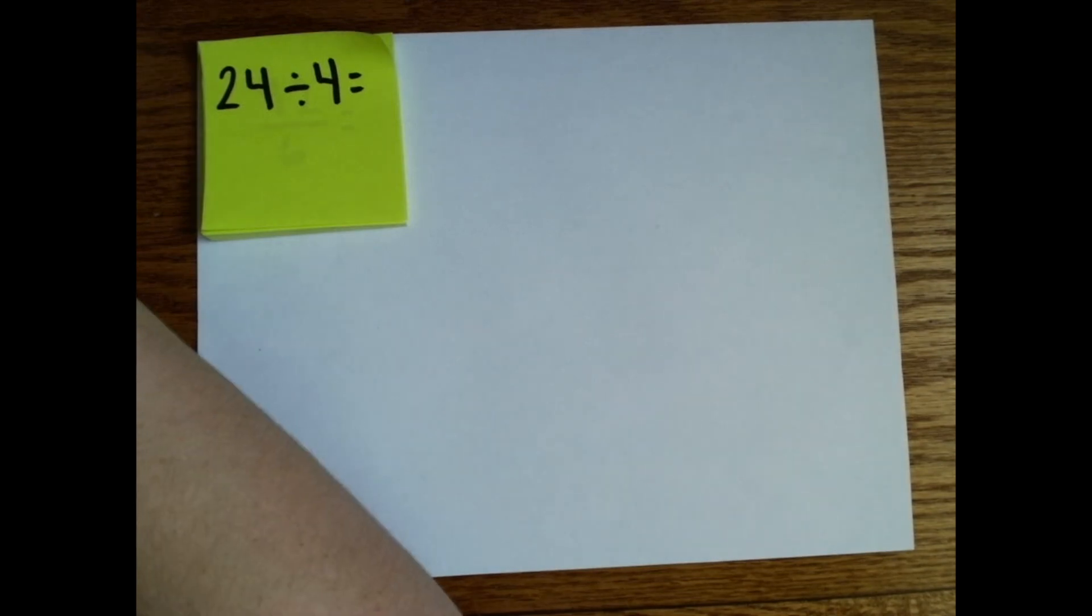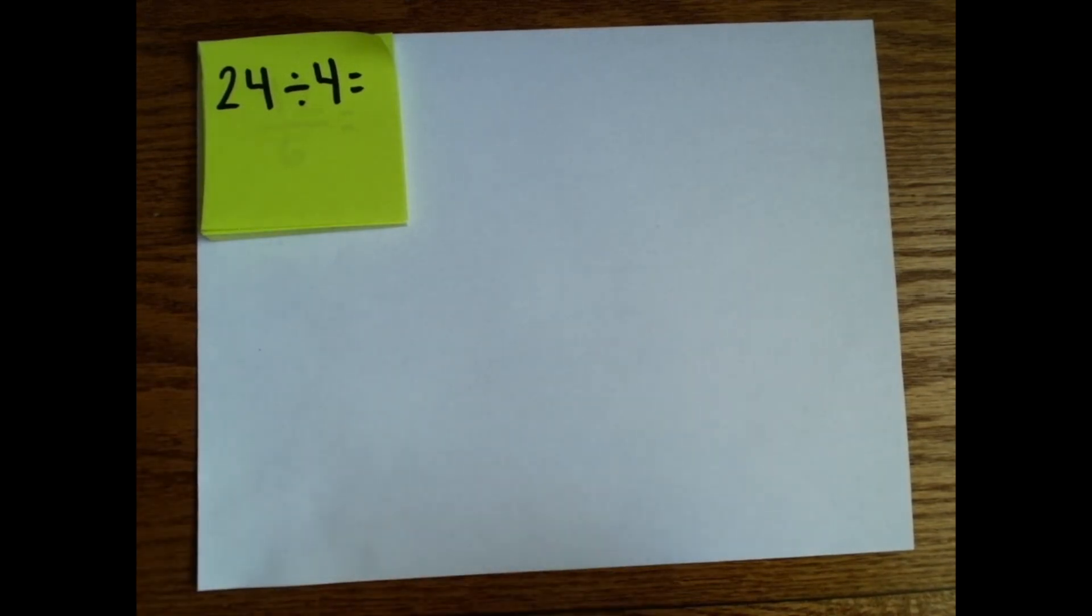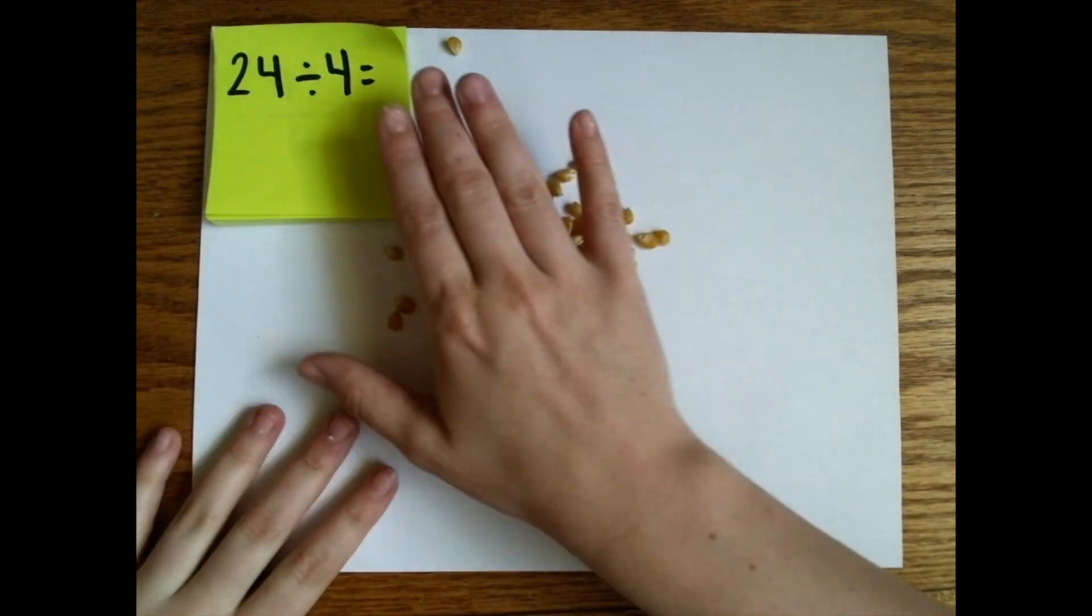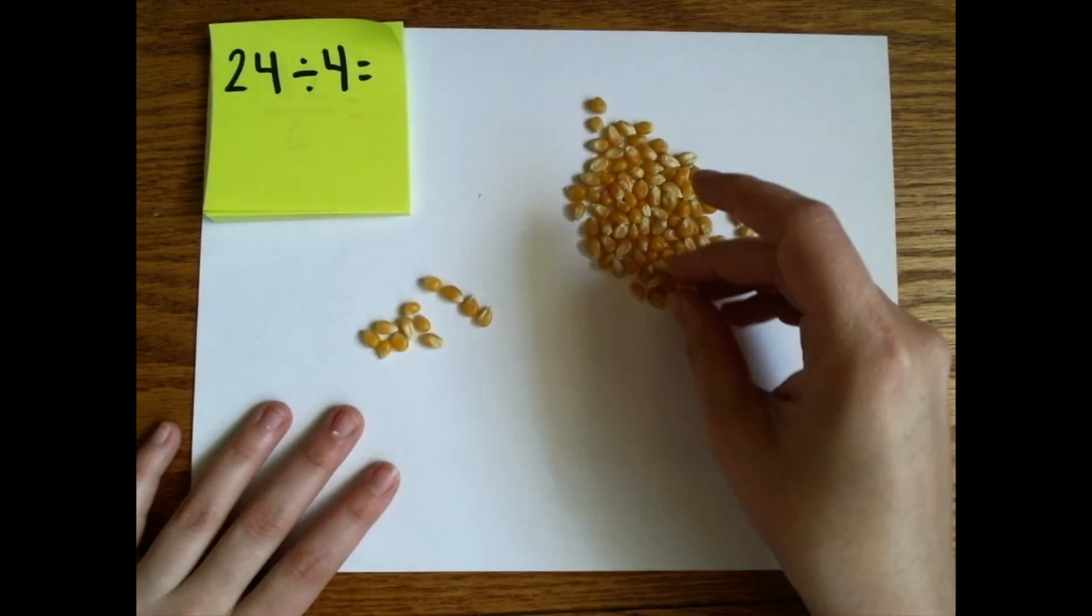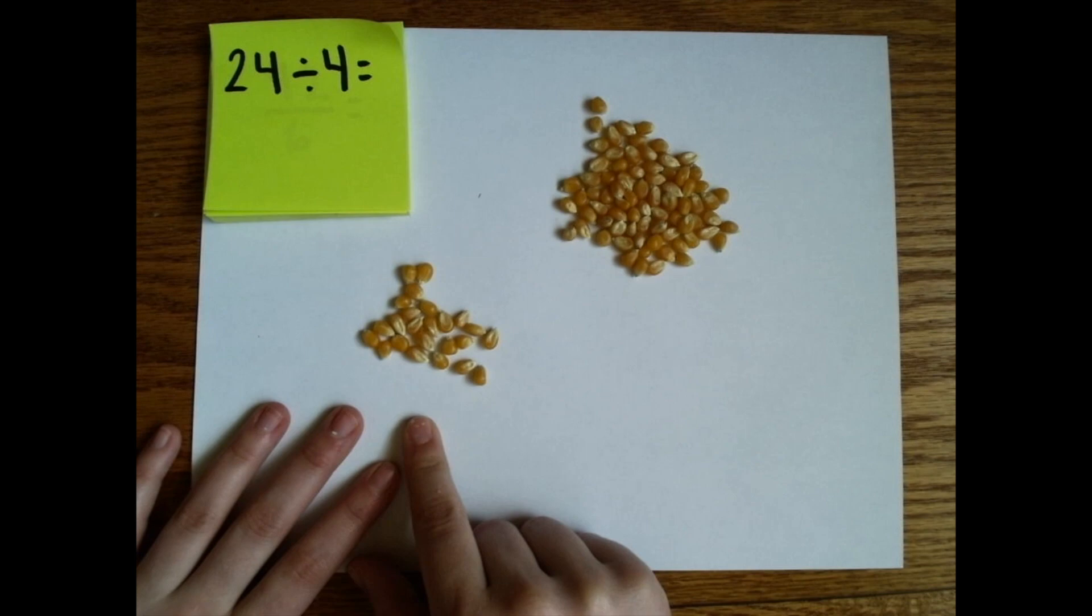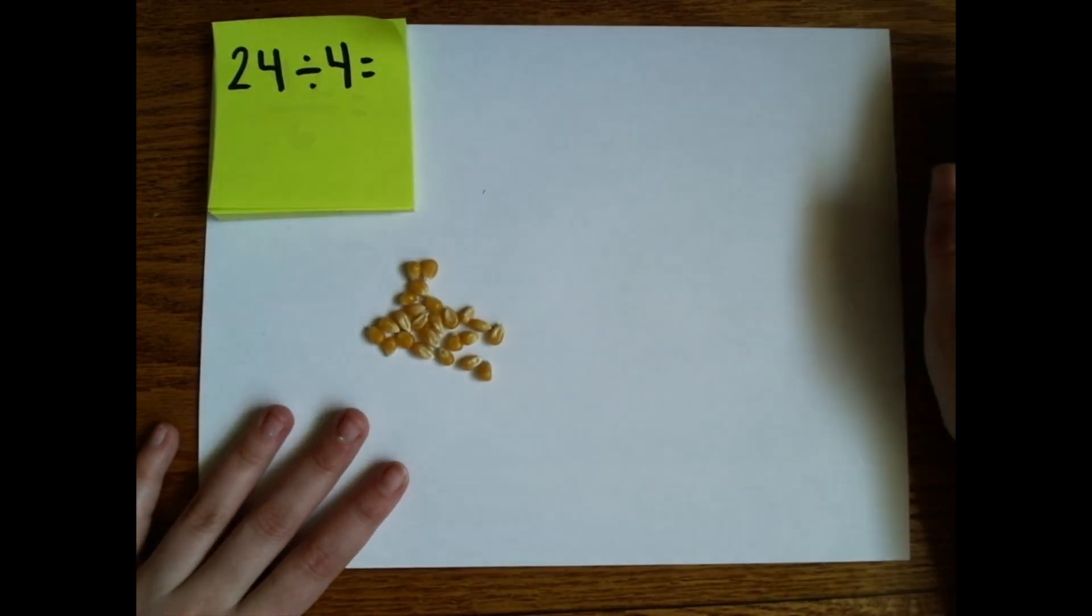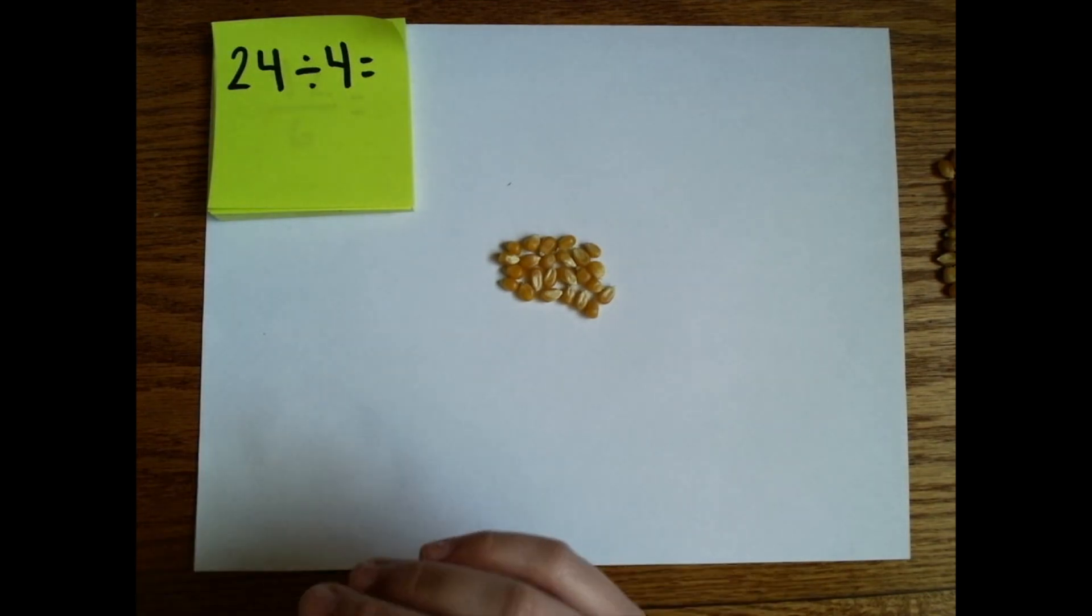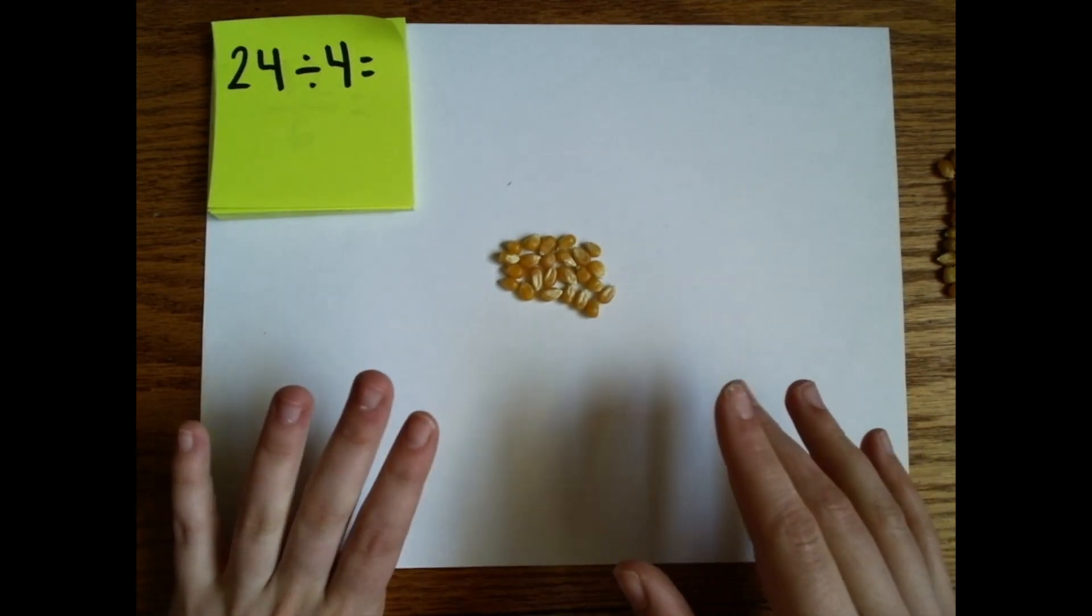What I'm going to do is I'm going to take 24 popcorn seeds. I'm just going to make a little pile here. I'm going to count them out really quickly. There's 24. I'm going to move the rest out of the way. I'm going to take these 24 popcorn seeds and I'm going to physically move them into four equal groups. I'm going to divide it into four equal groups.